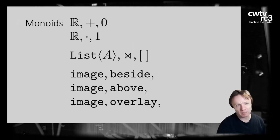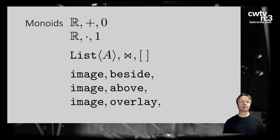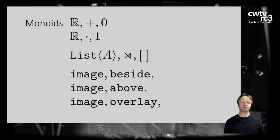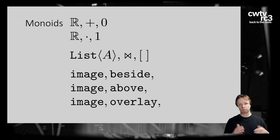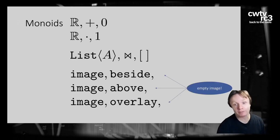Have we seen monoids? Essentially all the semigroups we've already seen are also monoids. With the plus operation on numbers, zero is the identity — add zero to a number, you get back that number. With multiplication, one is the identity. With lists, concatenating with the empty list gives you the same list. The bottom three examples — beside, above, overlay — all have the empty image as their identity, which is invisible.